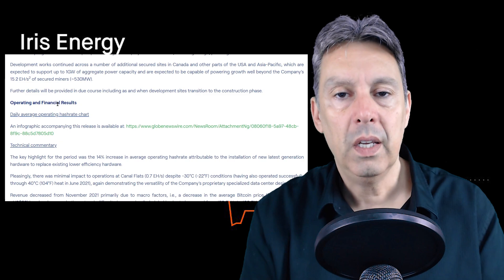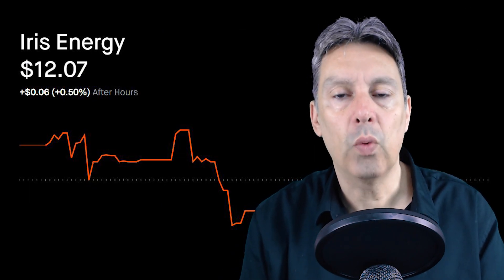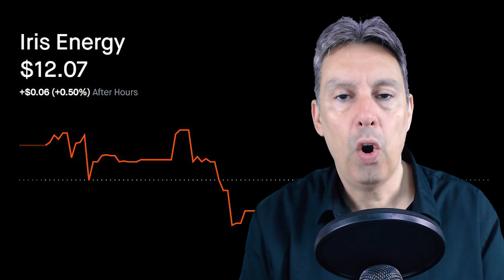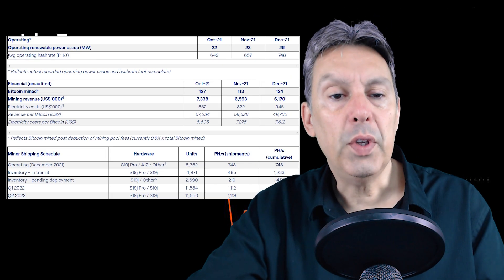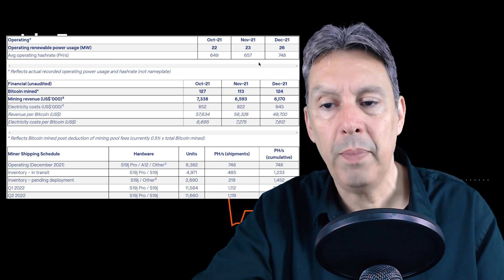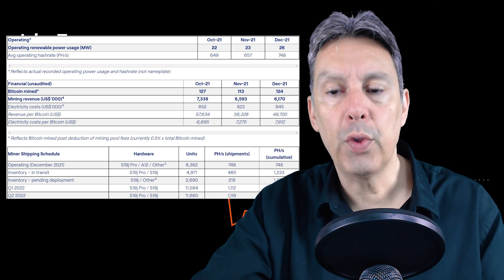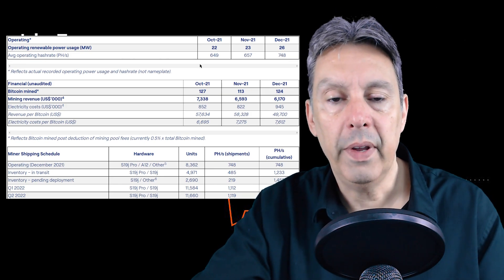Let's take a look at their plan and see how they plan to roll out this 15.2 exahash over the next couple of years. This is showing their average operational hash rate, which went from 649 petahash to 657 to 748. They've had some small growth over the last few months and that's encouraging.